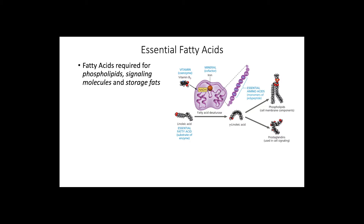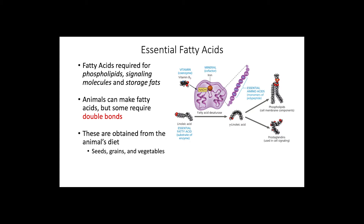Now let's look into essential fatty acids. These are needed for the synthesis of phospholipids, signaling molecules, and in the storage of fat. Animals can make fatty acids but they lack the molecular machinery to create fatty acids with double bonds. Therefore, these are obtained from the animal's diet and can be found in seeds, grains, and some vegetables.